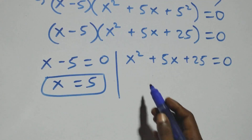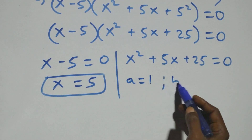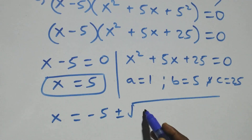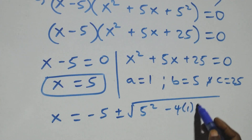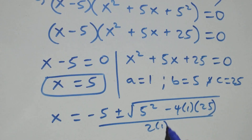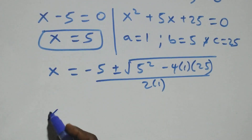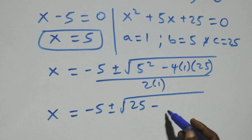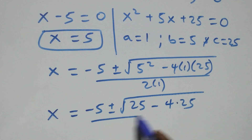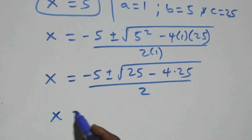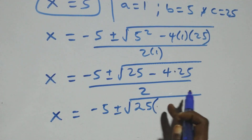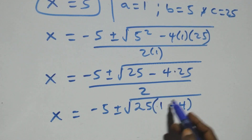Applying the quadratic formula again, this becomes x equals minus 5 plus or minus square root of 5 squared minus 4 times 1 times 25, all over 2. That is, x equals minus 5 plus or minus square root of 25 minus 4 times 25, all over 2. Factoring out 25, we have x equals minus 5 plus or minus square root of 25 times (1 minus 4), all over 2.